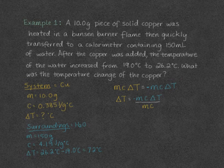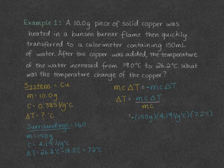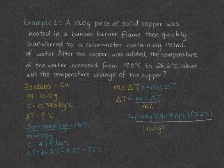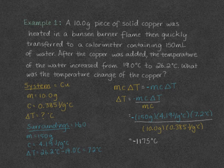Now we can plug in our numbers. We have 150 grams of water times 4.19 joules per gram degrees Celsius times 7.2 degrees Celsius — and that's negative — divided by 10.0 grams times 0.385 joules per gram degrees Celsius. We get a temperature change of negative 1,175 degrees Celsius. So the copper's temperature decreased by 1,175 degrees Celsius.